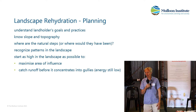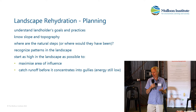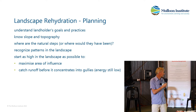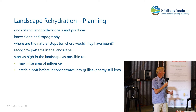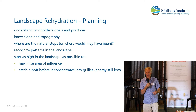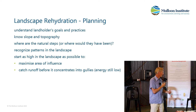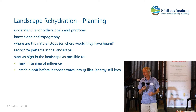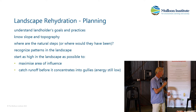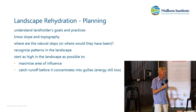When going about doing landscape rehydration, we want to plan, and as Tim was saying before, we want to do it as best as we possibly can initially so that we have fewer stuff-ups down the track. Firstly, we need to understand the landholder's goals and their practices — what they're doing on the landscape. We need to know the slope and the topography, how the land looks, and where the natural steps are. This is where the natural catchment function analysis comes in. We want to start as high in the landscape as possible so we can maximise the area of influence, reduce flows, and catch runoff before it concentrates in the gullies — redistributing that flow.